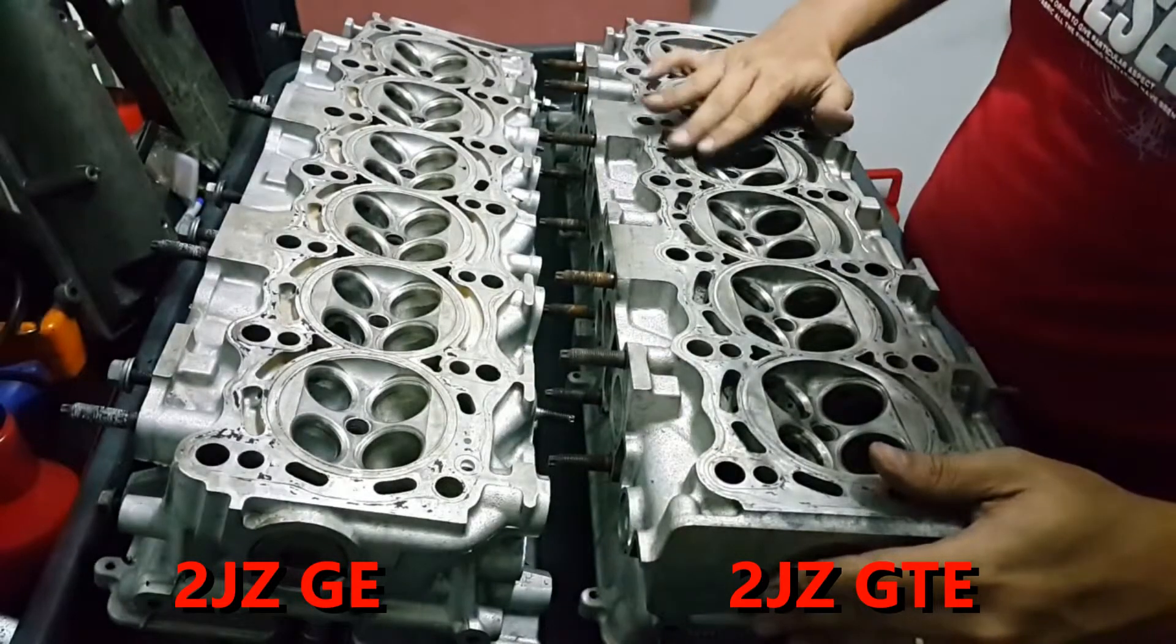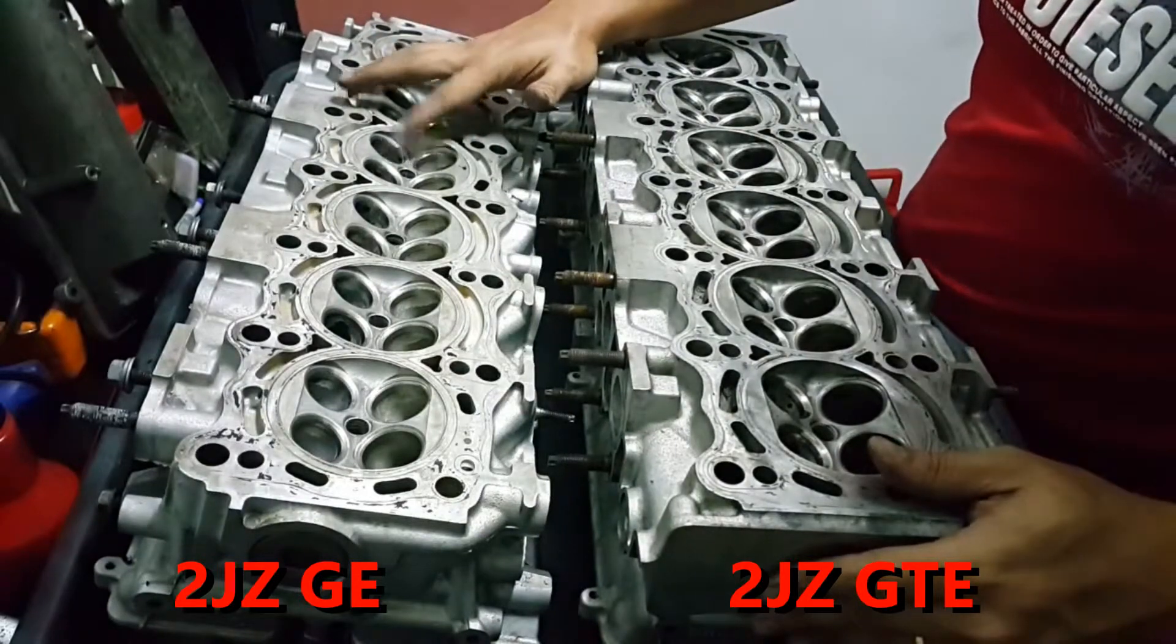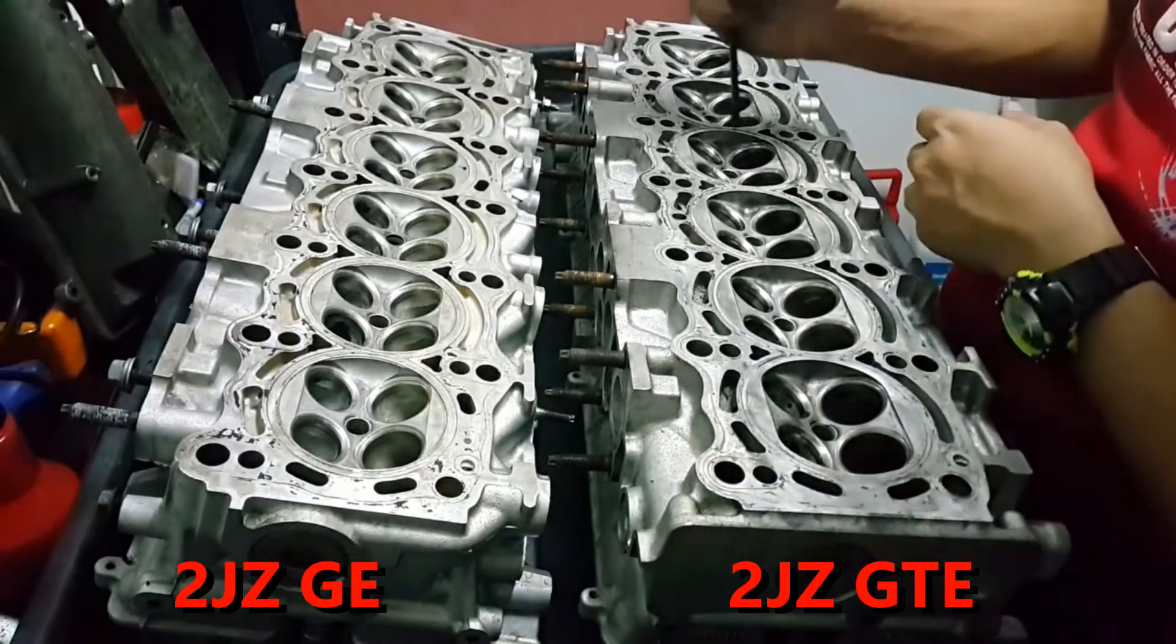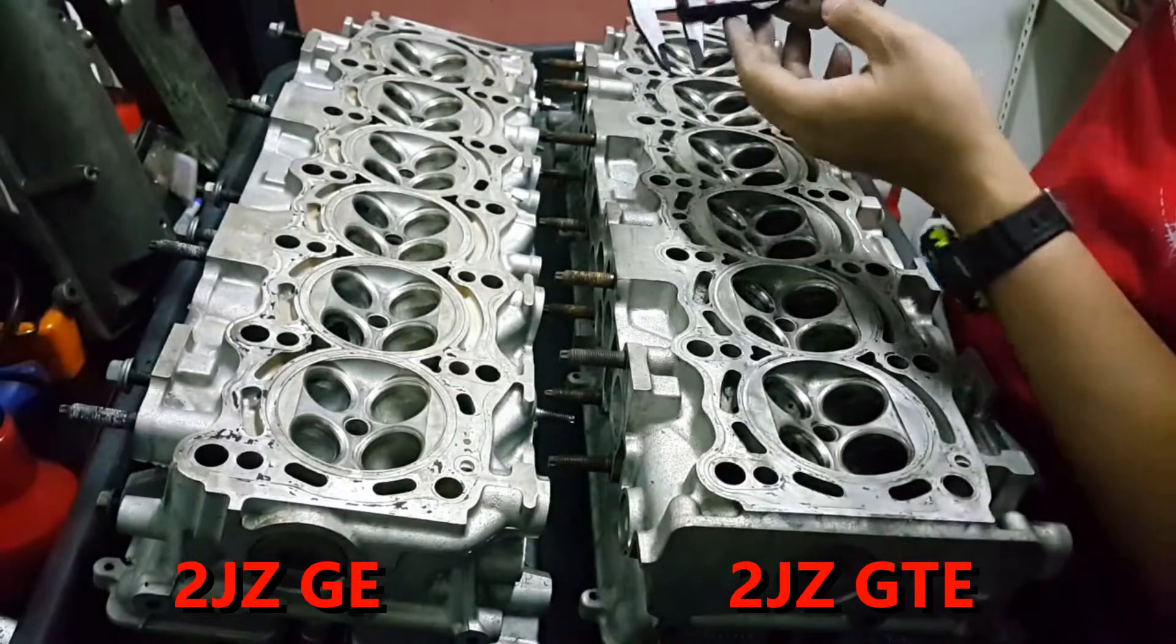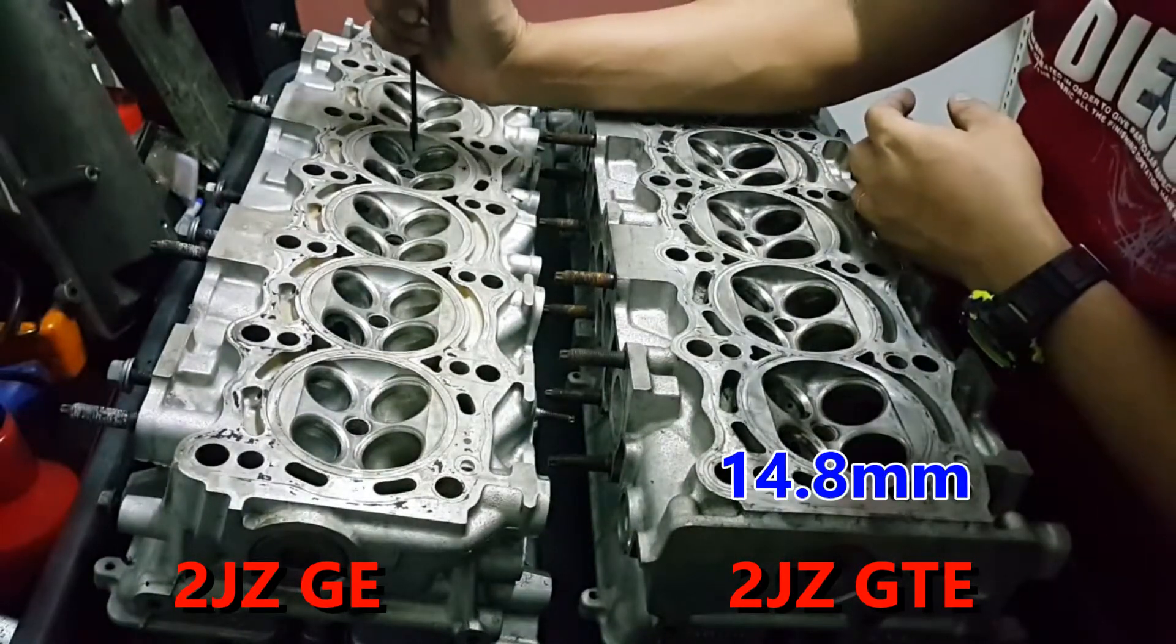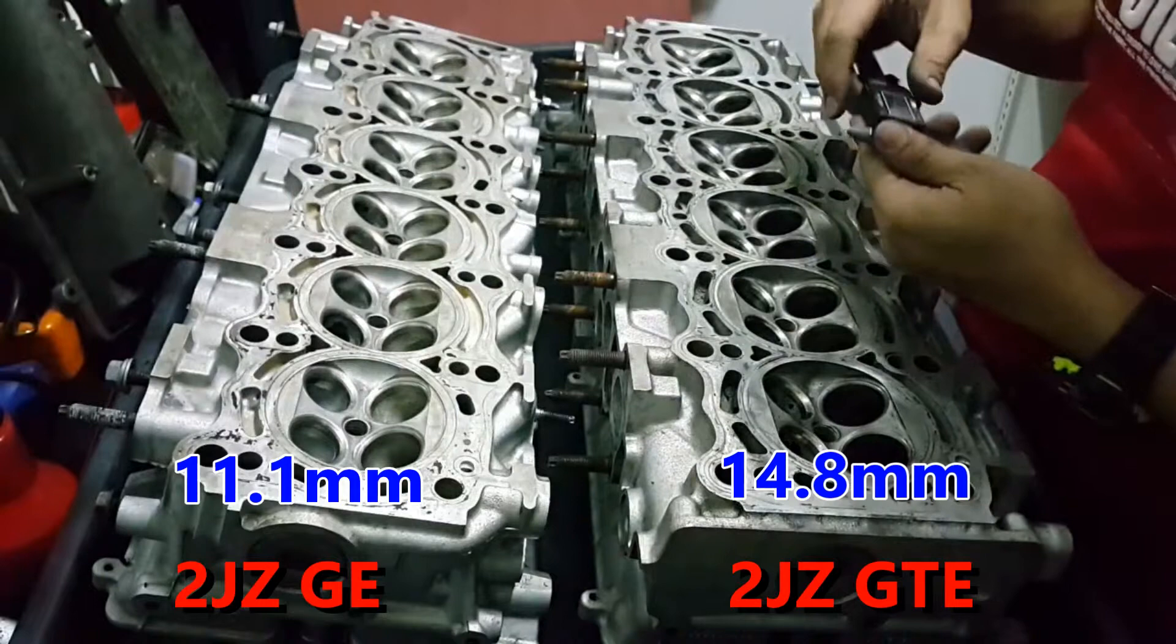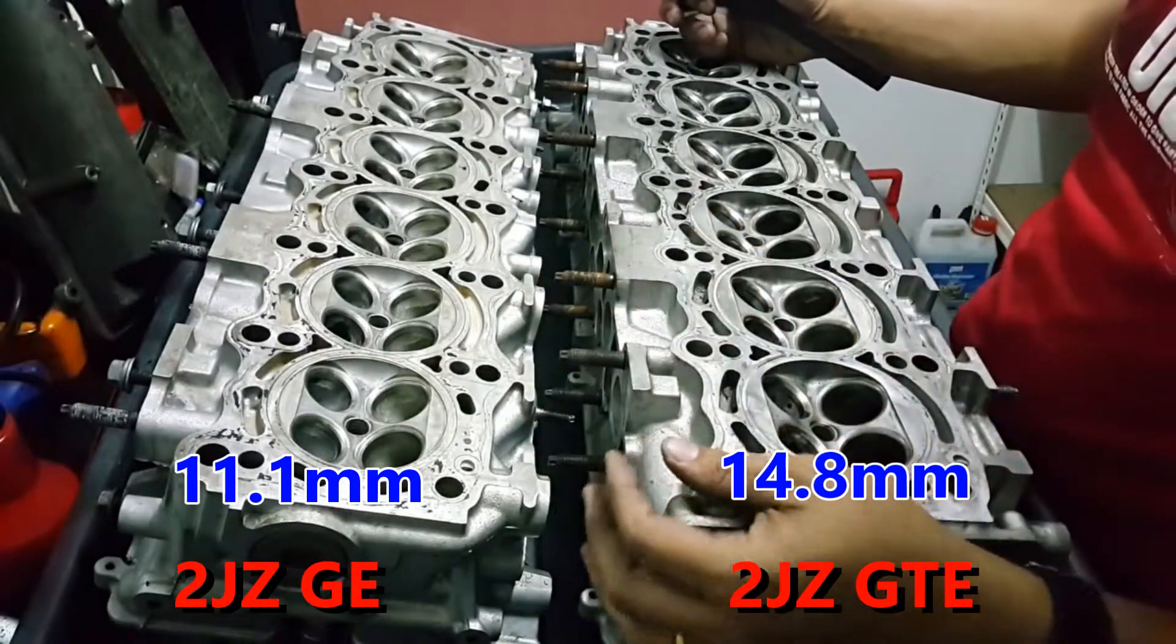We can see that the depth of this is much more than the NA. You can use vernier to check it. About 14.8 mm. 11.1 mm. So what we can translate in CC is SP low.